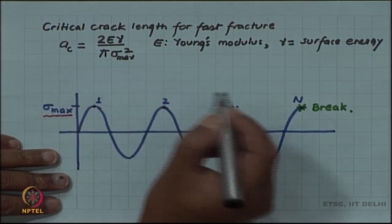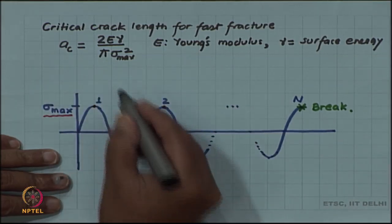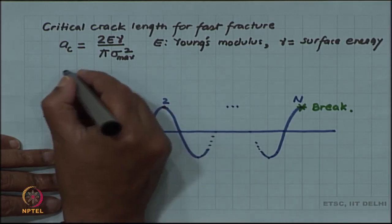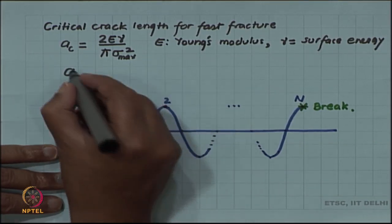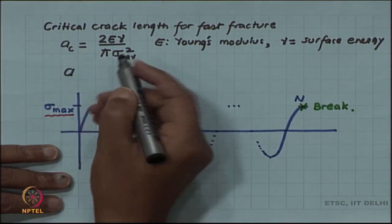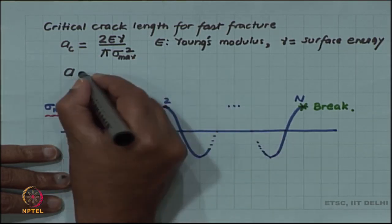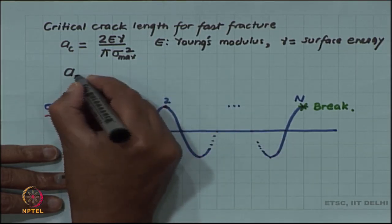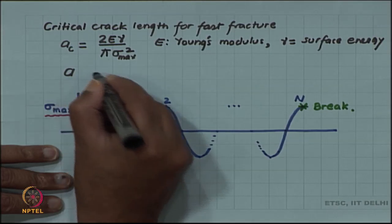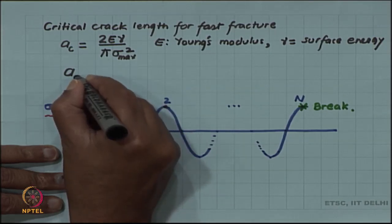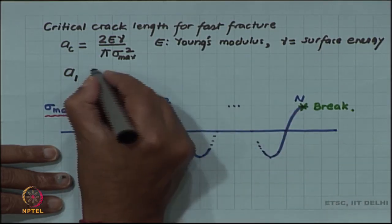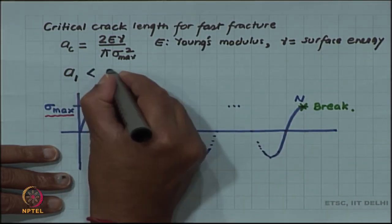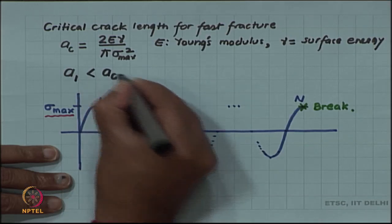Now, since the component did not fail on reaching this maximum stress, this means that the existing crack length in the material - let me call that A initial or A1 - is less than this critical crack size. So A1 is less than Ac.